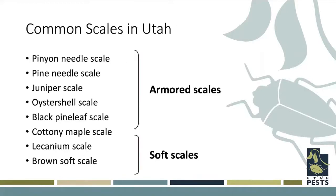Now we'll get into the common scales found in Utah. We have armored scales and soft scales. I'll go through these one by one — you'll notice that a lot of the symptoms they cause are very similar, and management is very similar regardless of species. All that changes is what the species looks like, how we identify it, and what the host plants are.